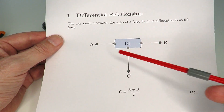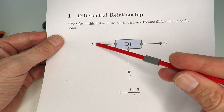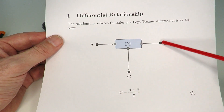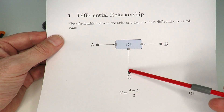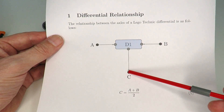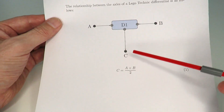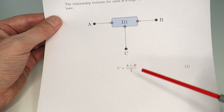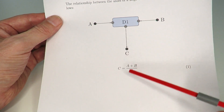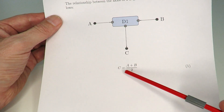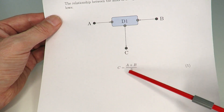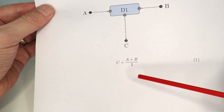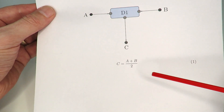D1 has an input axle A and axle B, and an output C coming from the barrel. The relationship between A, B, and C is simply that the output C is the average of A and B — that's just (A + B) / 2.